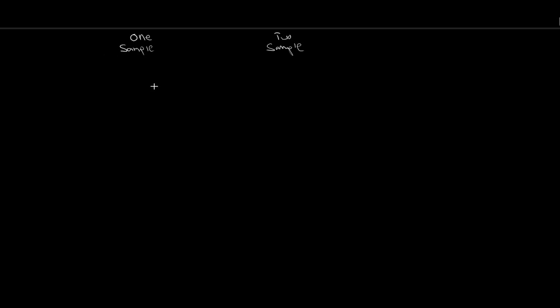Once we've narrowed down to one-sample, we need to figure out what population parameter we're looking at. Are we asking a question about the population proportion P, or about the population mean mu? If we're talking about mu, you'll typically have raw data, a standard deviation or the ability to calculate one, and something to do with averages. For mu, we're dealing with interval or higher level data - interval or ratio data. For proportions, we can be dealing with nominal or ordinal level data.